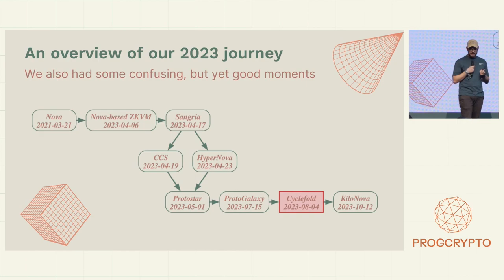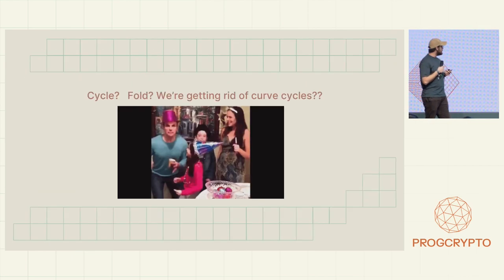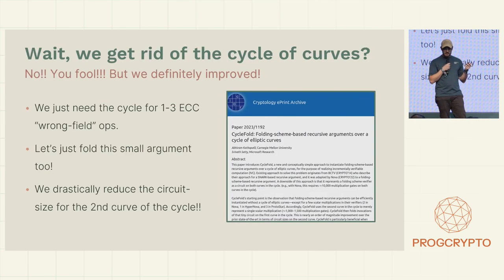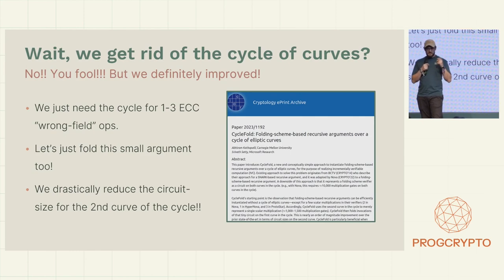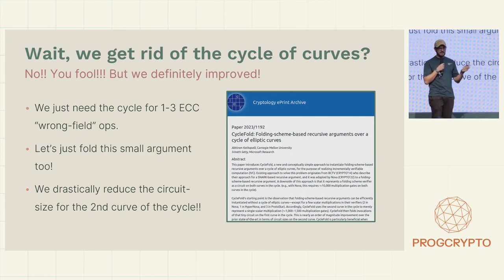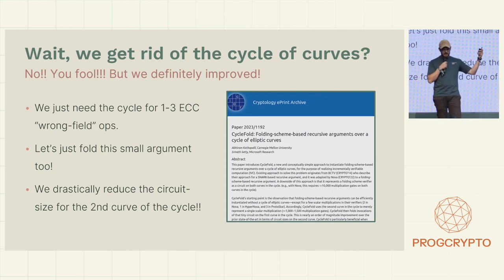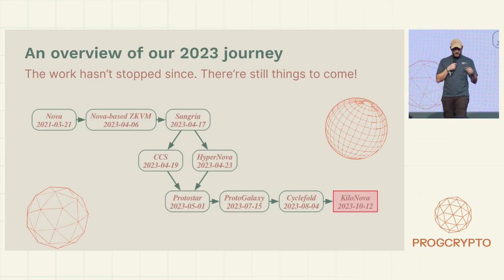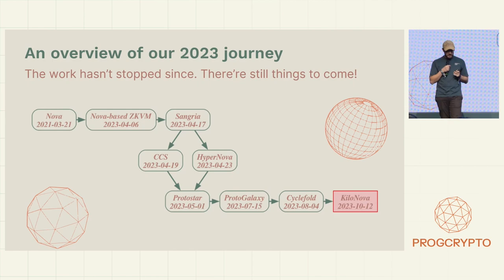Finally, we got Cyclefold. My reaction when Cyclefold came out was: we get rid of the cycles? Well, turns out, no — sadly, that would have been insane. But we get much, much better: now if we need to write a decider for these things, the decider is significantly more optimized, and we need to do a lot less wrong-field arithmetic inside our circuits to actually verify the entire thing on-chain. Then things like Kilonova came along — that adds zero-knowledge into the mix, which was something we were also missing.